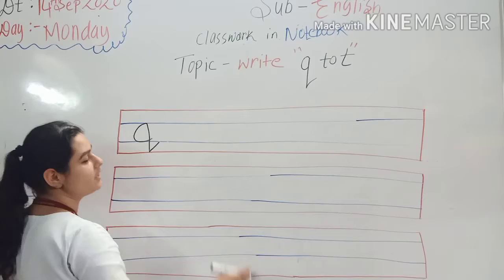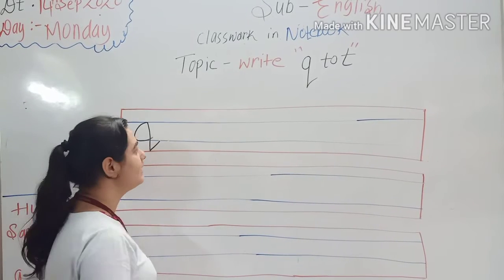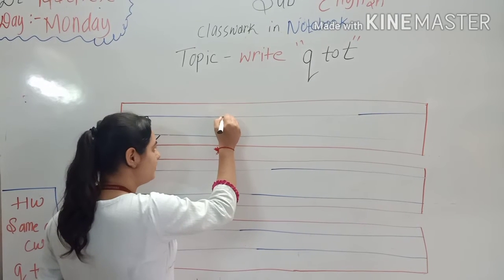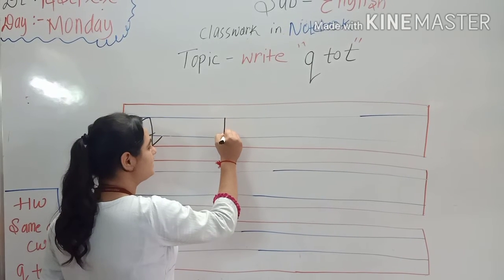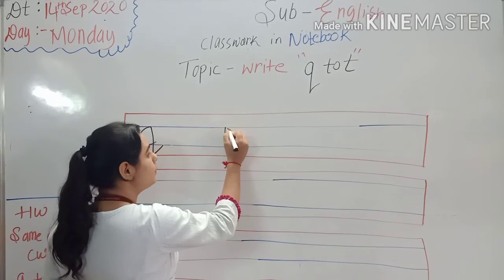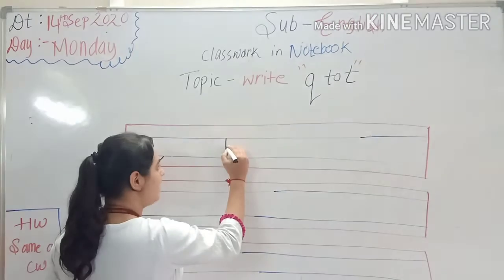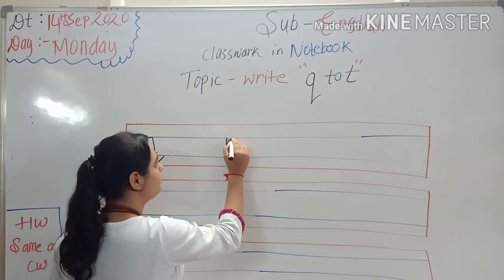Now Q, after what comes? Kids tell me. Yes, R. So kids here we write R. In between two blue lines we make standing curve like this.